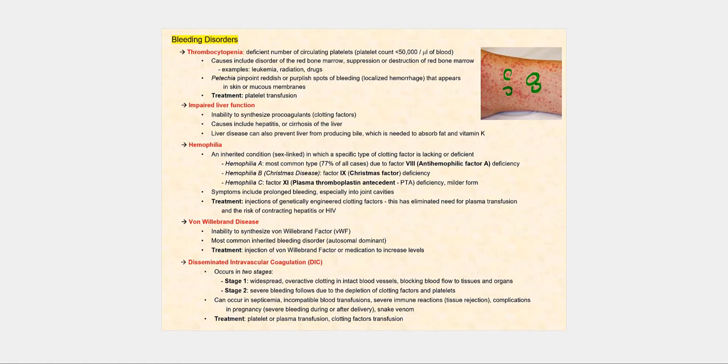The second major type of disorder involving hemostasis are bleeding disorders. Thrombocytopenia is a deficient number of circulating platelets. So we have less than 50,000 platelets per microliter of blood, when normally we should have platelets numbering in the hundreds of thousands per microliter of blood. Causes include disorder of the red bone marrow, as in the case with leukemia, suppression or destruction of the red bone marrow, which can result from radiation and as well as certain drugs. Petechiae is a classic symptom of thrombocytopenia, where we have these reddish or purple spots, which represents localized blood loss or localized hemorrhage that appears in the skin and mucous membranes. Treatment is transfusion of platelets.